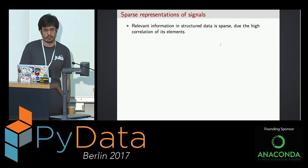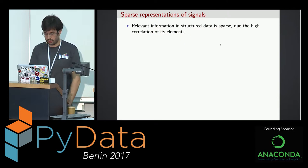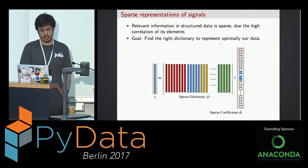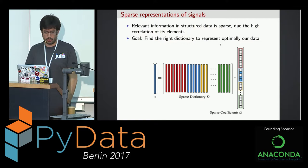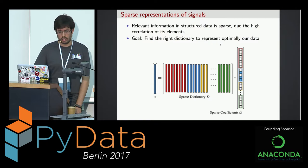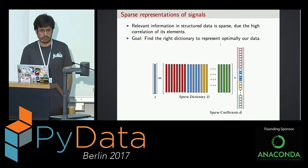This representation system will be useful not just to compress the signal — to be able to transmit it or store it optimally — but also to get the features of the signal. If you get the relevant information, you get the important features. Relevant information will have a high correlation of its elements. So our goal in signal processing is to find the right dictionary or representation system to optimally represent our data.